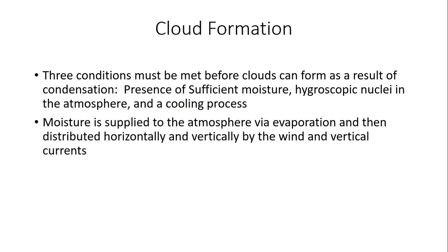Before we get into the different cloud types, let's talk about how clouds form. There are three conditions necessary before clouds can form as a result of what's known as condensation. Condensation is basically the conversion from water vapor into a liquid — a gaseous state of water to a liquid state. In order for clouds to form, we need rising air in the vertical. As it rises, it cools and condenses, forming these cloud droplets. First and foremost, we need sufficient moisture in the atmosphere.